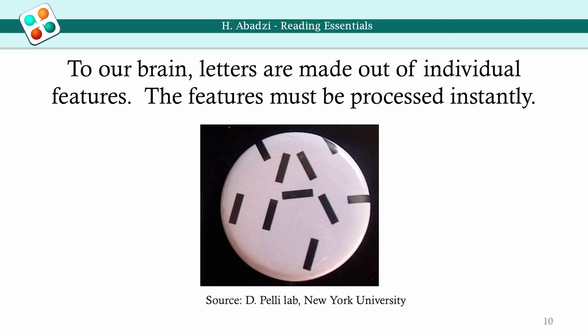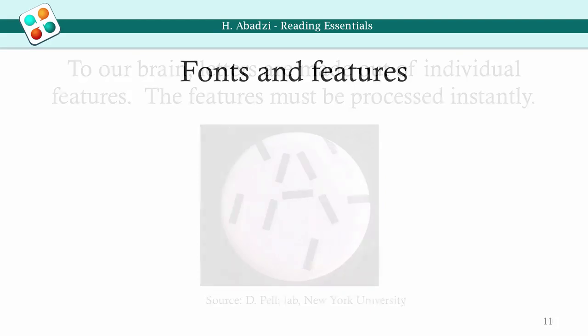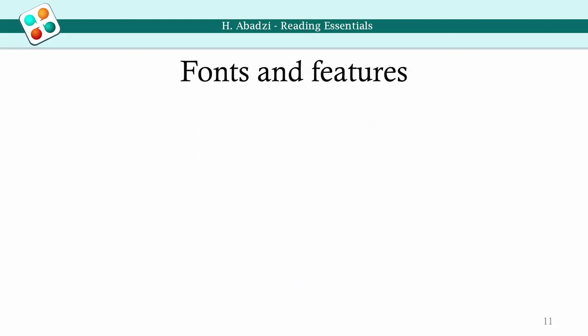We read best with our central vision. In the periphery, the letters look crowded and unclear. Expert readers read four to five letters in the center of their vision, but beginning readers get only one or two letters. Long words without spaces slow down the reading rate, and in the beginning, letters must have space between them.